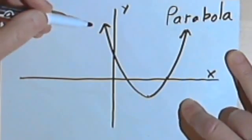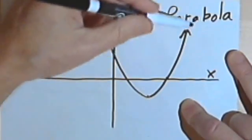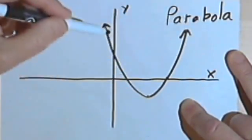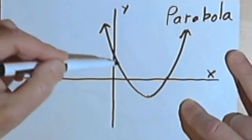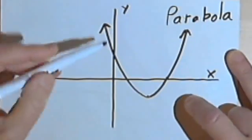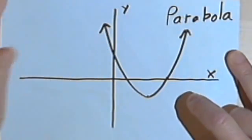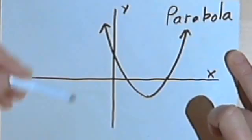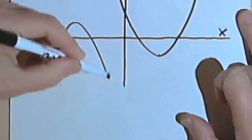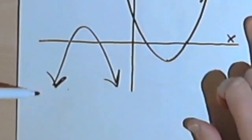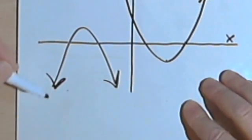And all quadratic functions will have the form of a parabola, a curve like this. So the parabola can either open upward, in other words it can go up on the left end and upward on the right end, or it could also go down. It could be something like this, over here, where both ends of it face downward.